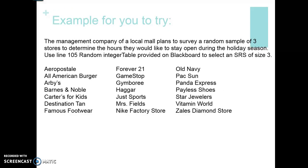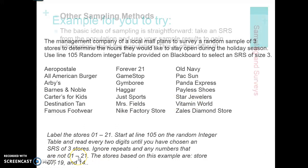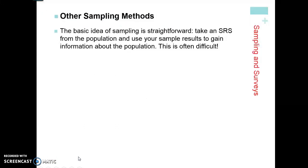Go ahead and try this next one — hit pause, then take a look at the answer. Here's how it should have read: two digits, state where you're starting, read every two digits to get a simple random sample of three stores, ignore repeats and anything outside your range of 01 to 21 since there were 21 stores. You should have gotten 07, 19, and 14.